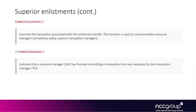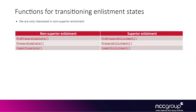We wanted to transition enlistment states — from pre-prepared, to prepared, and so on until committed. API names like pre-prepared-enlistment, prepared-enlistment, and commit-enlistment exist, so we assumed those were the ones to use. But it turns out the ones with 'enlistment' at the end of the name, like commit-enlistment, are for superior enlistments, which severely limit what you can do. The ones you actually want are those ending in 'complete', like pre-prepared-complete, prepare-complete, or commit-complete. This is basically a summary: use the functions in the left column to transition states for non-superior enlistments, and avoid the ones on the right column which are specific to superior enlistments.